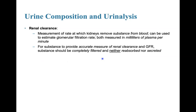Many diagnostic tests also look at renal clearance, which is the measurement of the rate at which the kidneys remove substances from the blood. This can be used to estimate the glomerular filtration rate, both measured in milliliters of plasma per minute. For a substance to provide an accurate measure of renal clearance and GFR, it should be completely filtered and neither reabsorbed nor secreted.